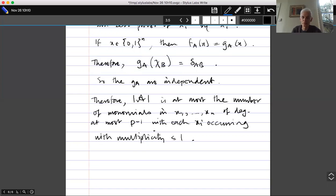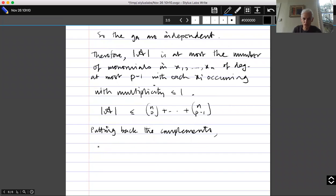This is my new—okay this is this curly A is the curly A where we removed one set from each complementary pair. So we'll later on have to double that, but let's just stick with this A. So we get that this A is at most n choose 0 plus plus n choose p minus 1. And putting back the complements, we get that the old A has size at most twice that.